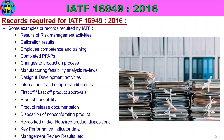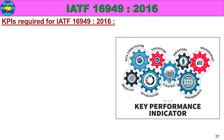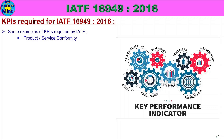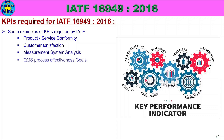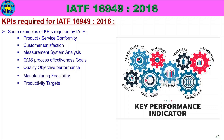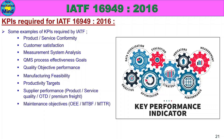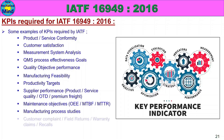KPIs required for IATF 16949-2016 include: product and service conformity, customer satisfaction, measurement system analysis, QMS process effectiveness goals, quality objective performance, manufacturing feasibility, productivity targets, supplier performance, product/service quality, on-time delivery, premium freight, maintenance objectives, overall equipment efficiency, mean time for breakdown/failure, mean time to repair, manufacturing process studies, customer complaints, field returns, warranty claims, recalls, and effectiveness of risk management activities.